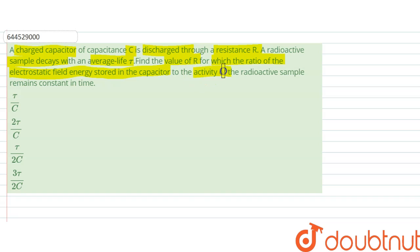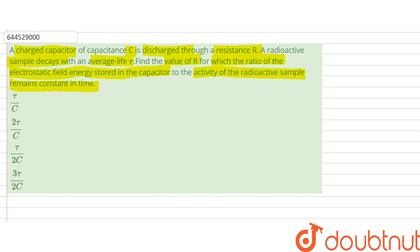Find the value of R for which the ratio of the electrostatic field energy stored in the capacitor to the activity of radioactive sample remains constant in time.